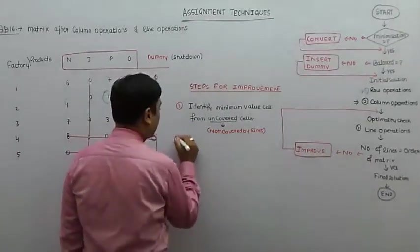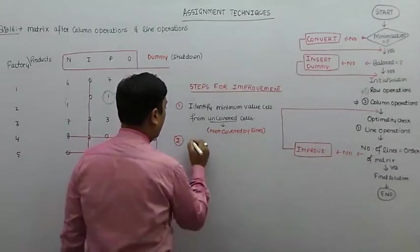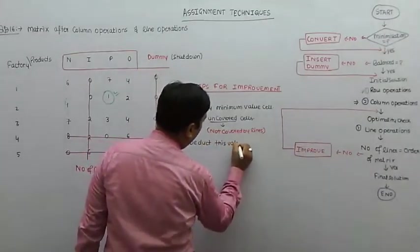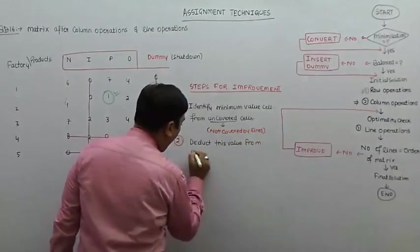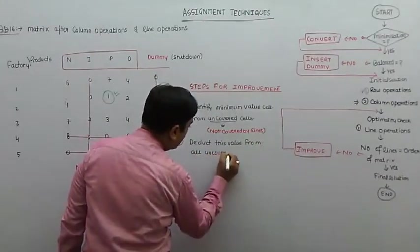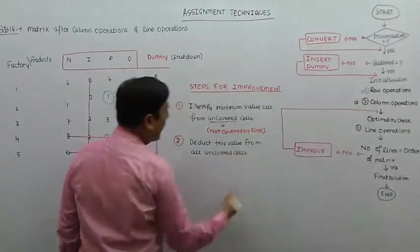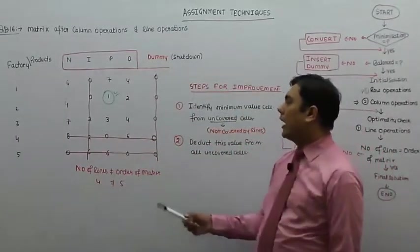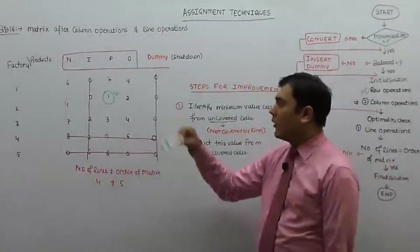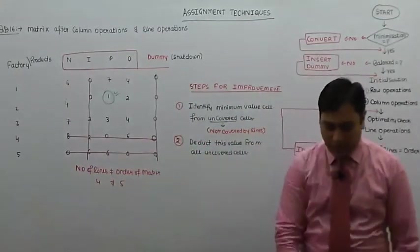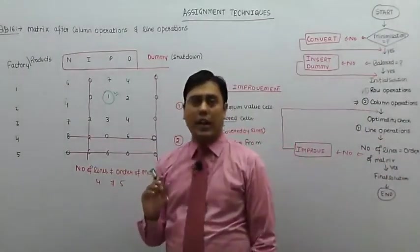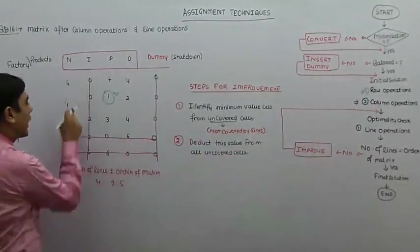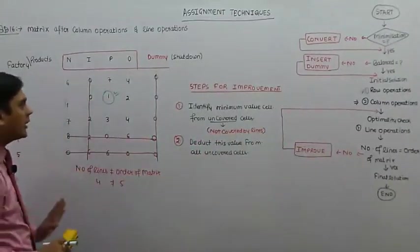Second step: deduct this value from all uncovered cells. Yaani ki ye jo value aapne identify ki — value one — one ko sabhi uncovered elements mein se deduct karna hai. Now I will use green pen for this.